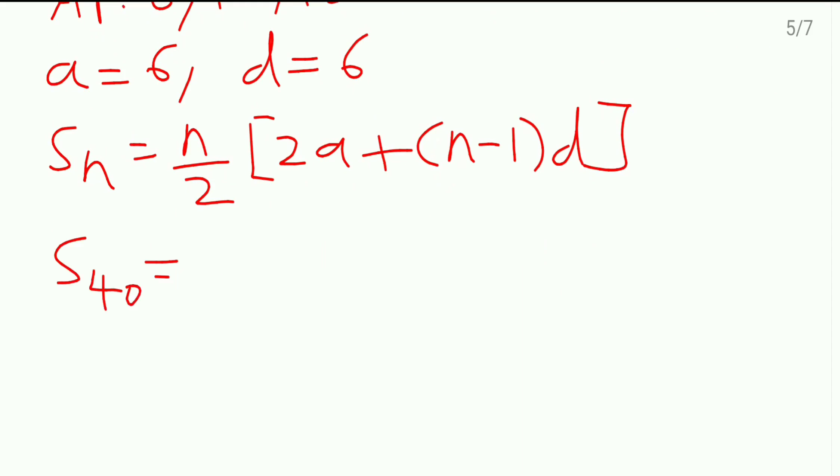40 by 2 is 20. So 20 in the bracket. This is 12 plus 39 into 6, which comes as 234.